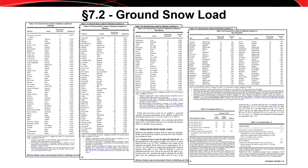A number of states highlighted on the map have their own specific tables. These are mostly cases where snow intensity varies significantly from one portion of the state to another, depending on mountains or features like lakes. For places like Montana, New Mexico, Colorado, and even New Hampshire, you'll be referred to a table of cities rather than using the map directly.